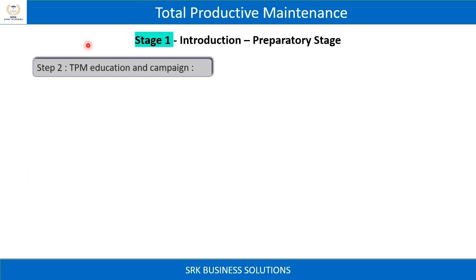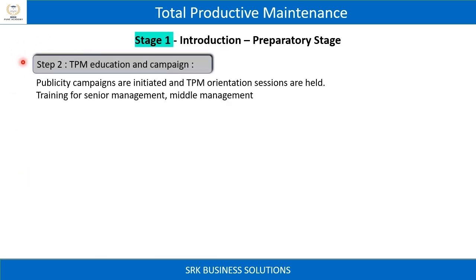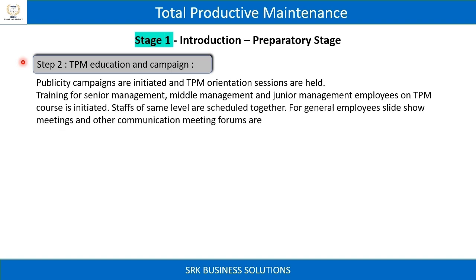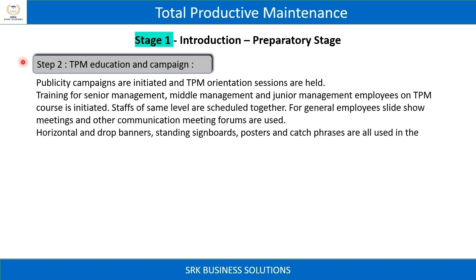Step 2: TPM education and campaign. Publicity campaigns are initiated and TPM orientation sessions are held. Training for senior management, middle management, and junior management employees on TPM courses is initiated. Staff of the same level are scheduled together.